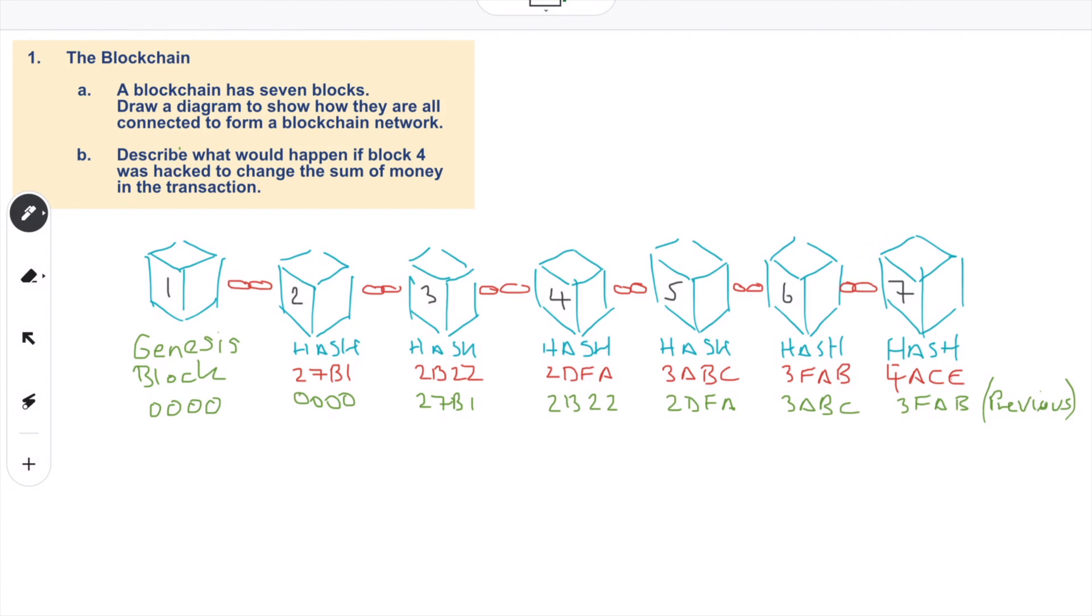So as you can see, I've drawn a diagram here with the seven blocks. The first block being the genesis block, and this starts with the number 0000, four zeros. And that's my block one. And then I've got the other blocks after it. As you can see with the diagram, a block contains its own unique hash number, but it also includes hash numbers from the previous block. It also includes a timestamp to show when it was created, the date and the time.